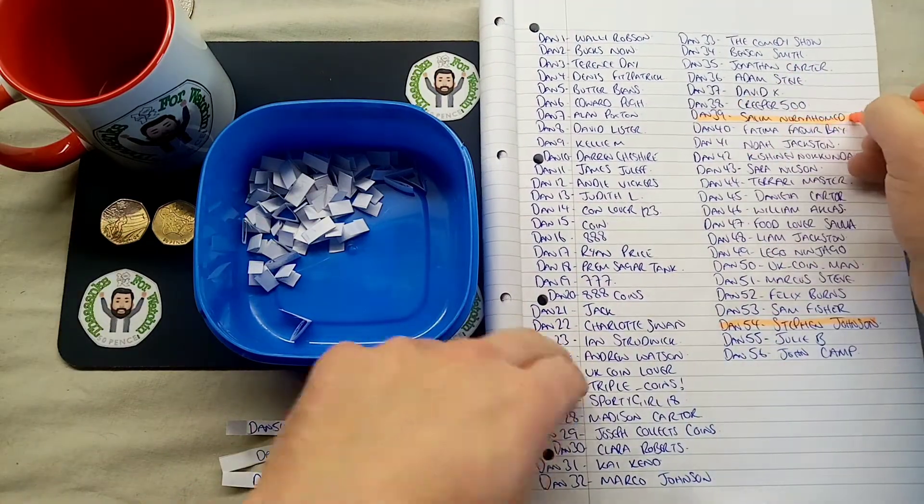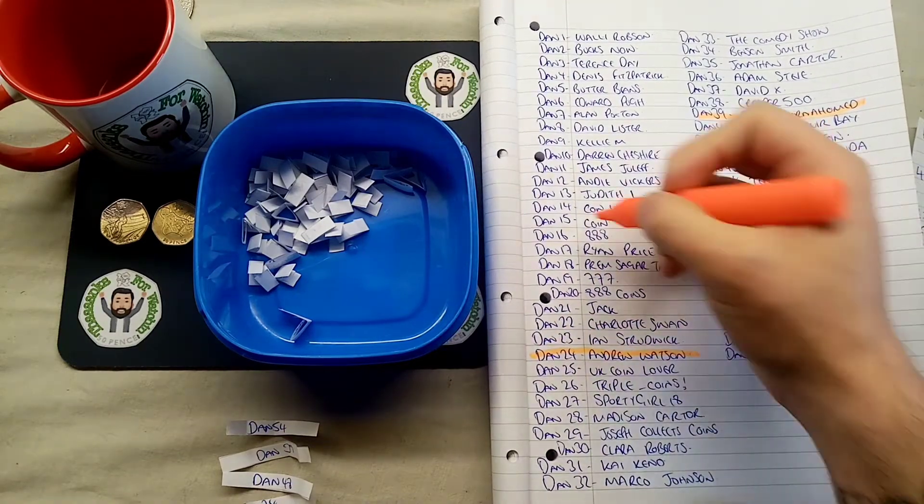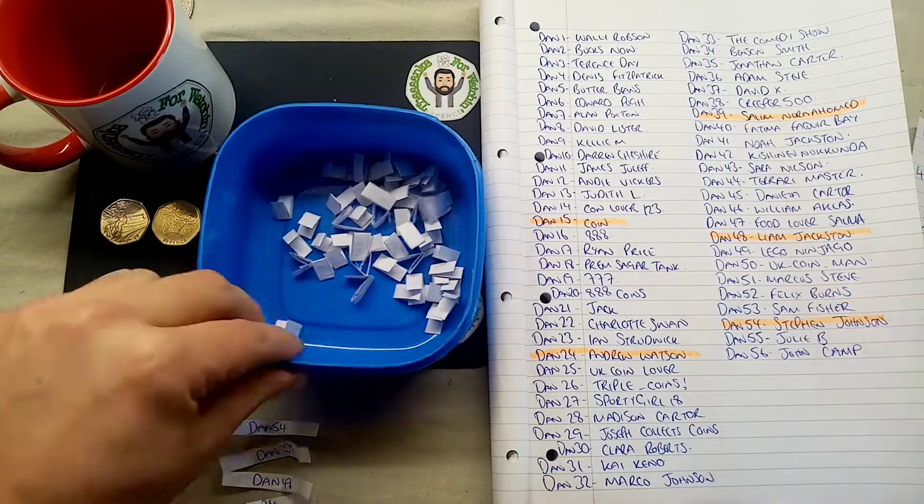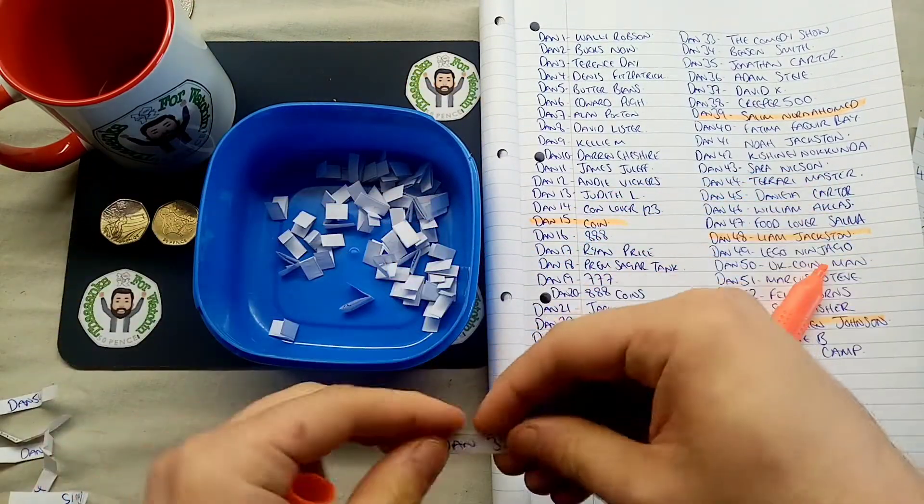So the first person out, 54, Stephen Johnson. The second name out is 39, it's Salim. After that, 48, Liam Jackson. 24, Andrew Watson and unfortunately Dan 15, Coyne. You guys are all out in round number one.